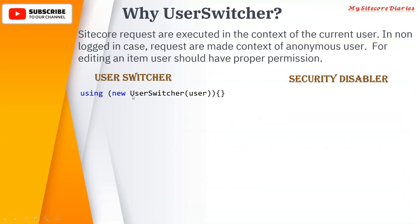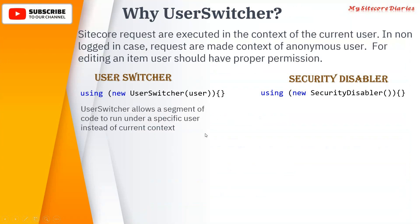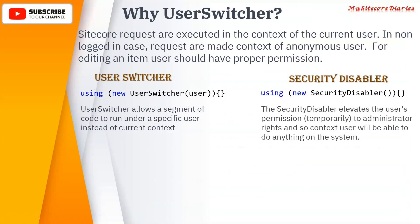User Switcher allows a segment of code to run under a specific user instead of the current context user. Whatever scope you are in using the User Switcher, that code will execute under the user you pass in — not the current user. Security Disabler, on the other hand, temporarily elevates the user's permissions to administrator rights for that scope.